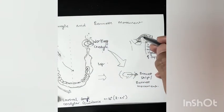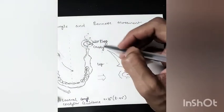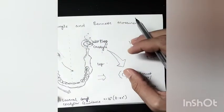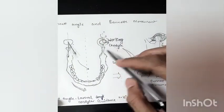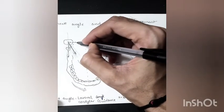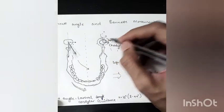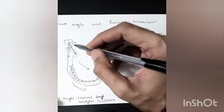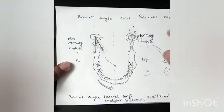This movement is called Bennett shift or Bennett movement. Bennett shift occurs in the same condyle, but it also occurs in both condyles because this condyle will also move and the working condyle will also move in the same way. But the Bennett angle is formed only by the non-working condyle.